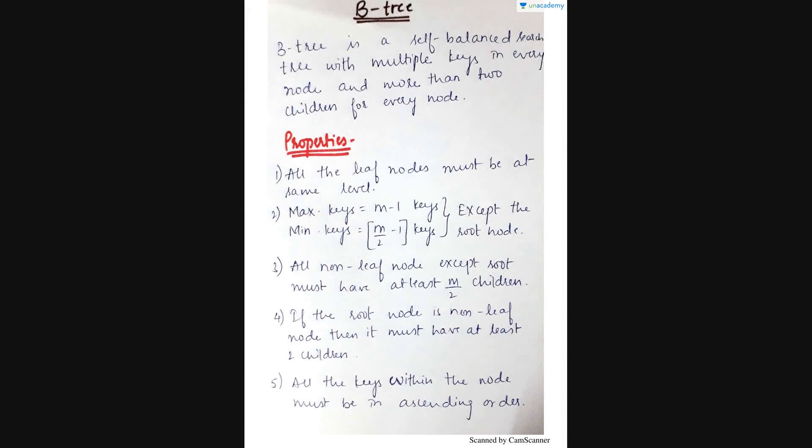Hello everyone. Today I am here to explain you all about B-tree. B-tree is a self-balanced search tree with multiple keys in every node and more than two children for every node. This is a bit like the simple tree but it has to follow some certain properties. So let's see what are those properties.